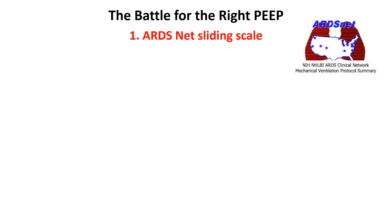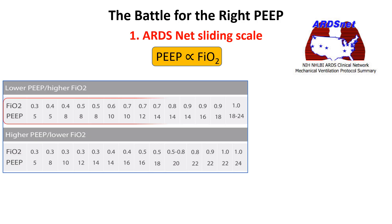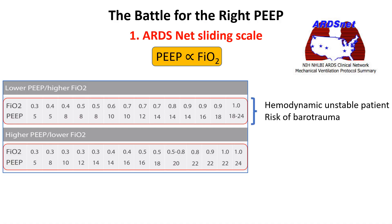The ARDSnet sliding scale for PEEP adjusts levels based on FiO2 requirements to optimize oxygenation while minimizing lung injury. ARDSnet provides two tables: the upper one with lower PEEP and higher FiO2, and the other with higher PEEP and lower FiO2. The lower PEEP/higher FiO2 table is typically used for hemodynamically unstable patients or those at risk of barotrauma. The higher PEEP/lower FiO2 table is preferred for patients with severe ARDS or significant atelectasis, as it promotes alveolar recruitment and reduces oxygen toxicity.